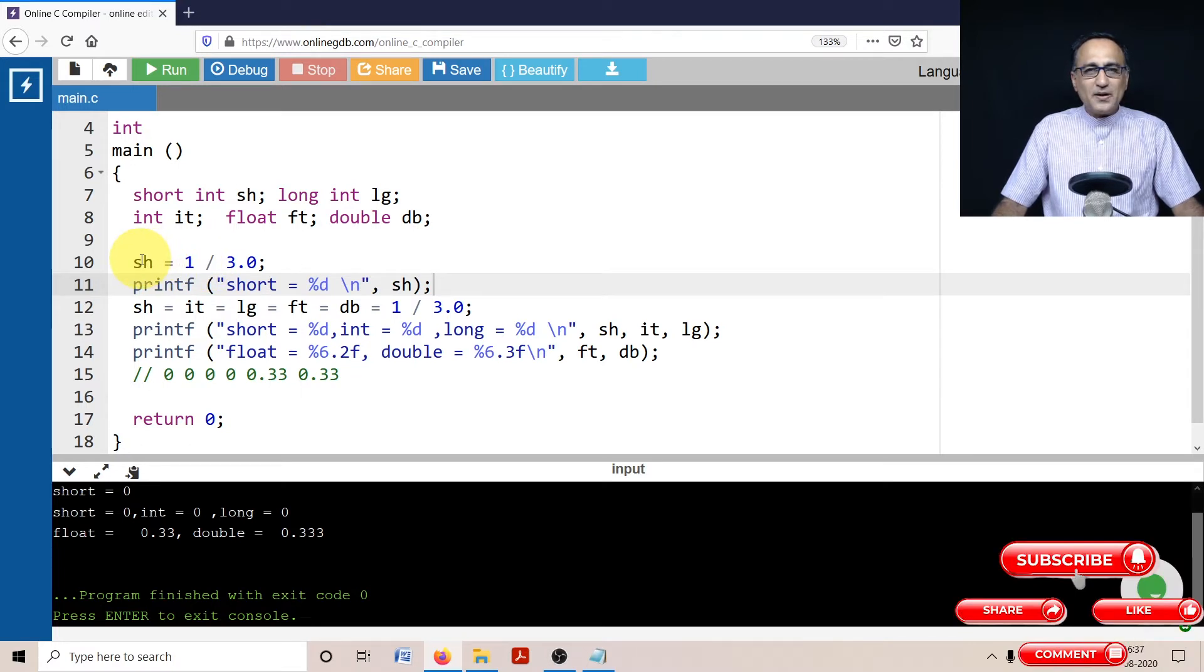So the fractional or decimal part does not get stored. sh is only going to have the value 0. When I print sh, it's going to print 0.